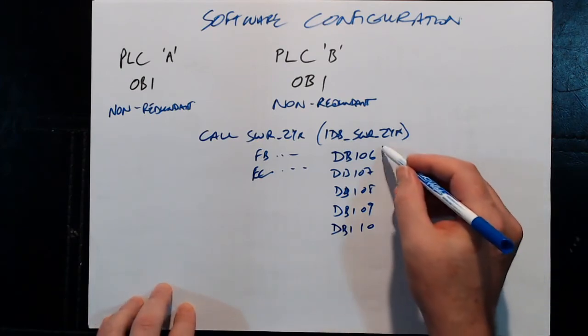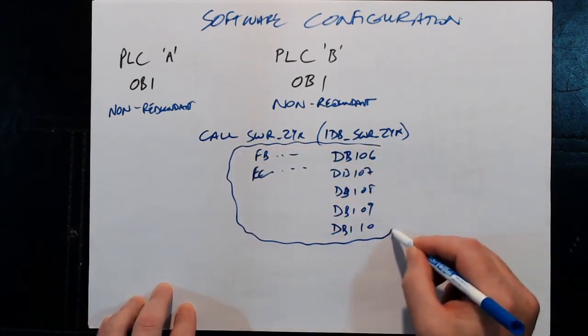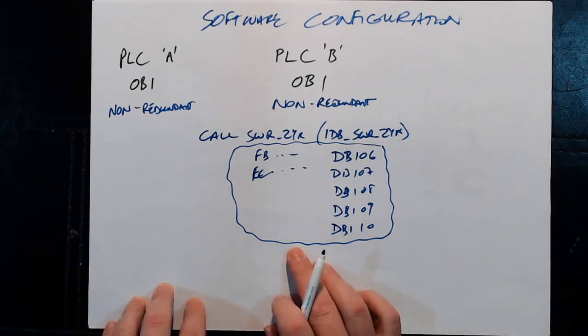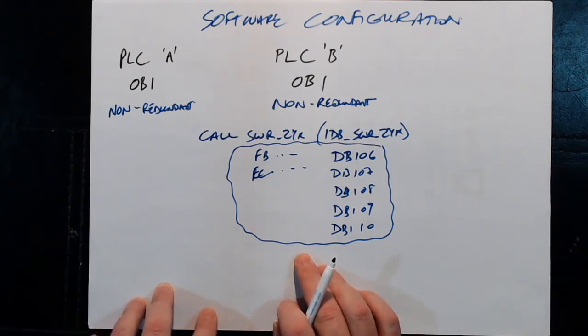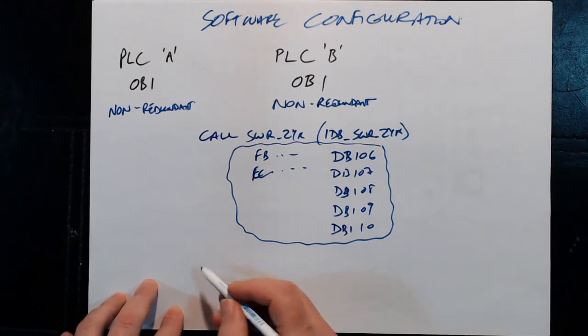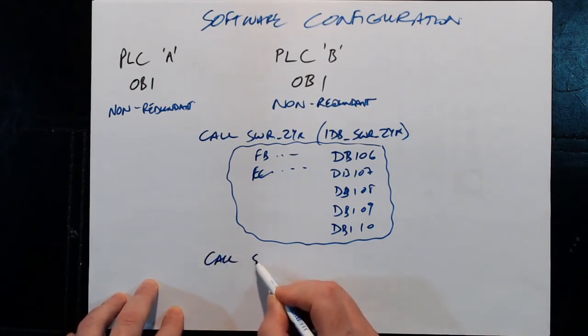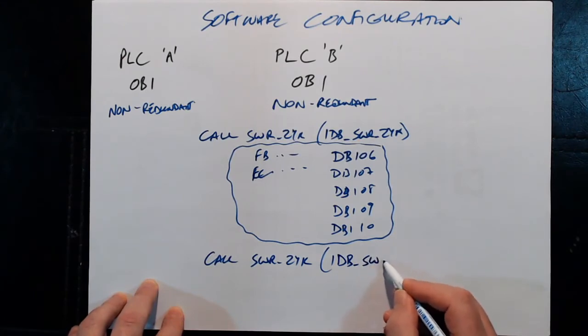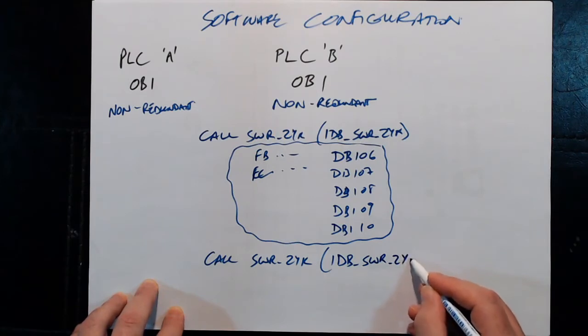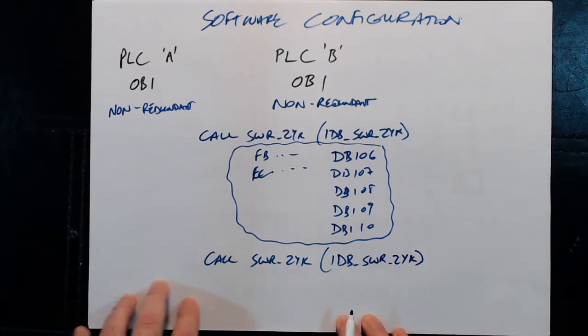So this is all part of the redundant program. And this will be called in one of the two PLCs, whichever one is in control of the outputs, whichever one is calling itself master at that time. At the end, we do another call to the same function block, and we call the same instance DB. This is a little bit different to what you normally see in a normal PLC, because typically you don't call the same function block with the same instance DB in two different places. But for this specific application you do.